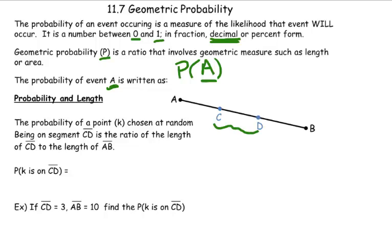So what we're gonna look at is the probability of a point, some point K, some value K, chosen at random, being on segment CD. So some value K, and what is the probability that it will fall in this CD range, in this CD segment? And this is gonna be the ratio of the length of CD to the length of AB.